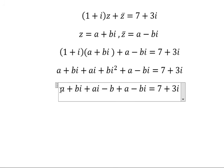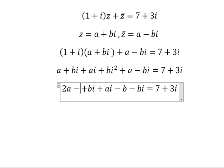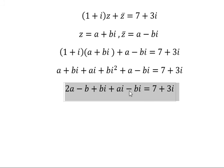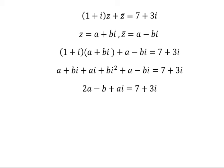Now we need to simplify. A plus a is 2a, and I will put negative b here. Now bi minus bi cancels out. This is the real section and this is the imaginary section.